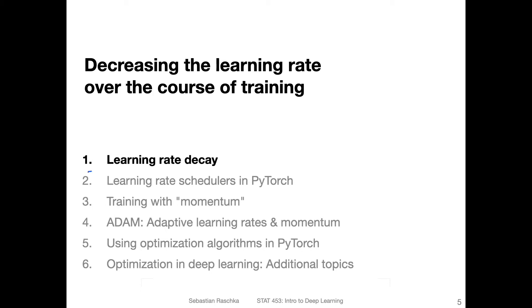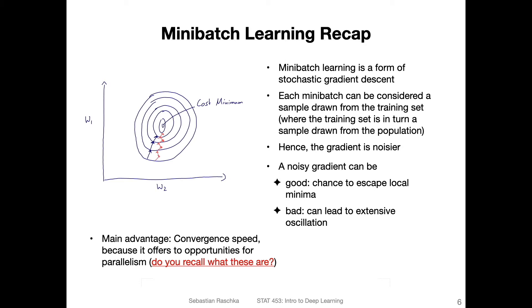Our first topic today is learning rate decay, that is decreasing the learning rate over the course of training. So just to briefly recap, what is mini batch learning. Mini batch learning is a form of stochastic gradient descent, where we draw mini batches from the training set.